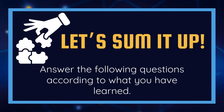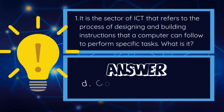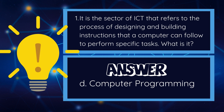Now that we know the different sectors of ICT, let us sum it up by answering the following questions. Question number one: it is the sector of ICT that refers to the process of designing and building instructions that a computer can follow to perform specific tasks. What is it? a) telecommunication, b) visual arts, c) computer system servicing, or d) computer programming? Very good, the answer is letter D — computer programming.